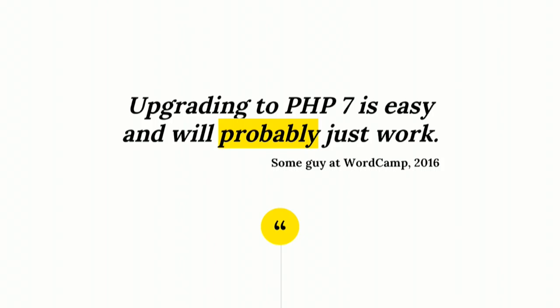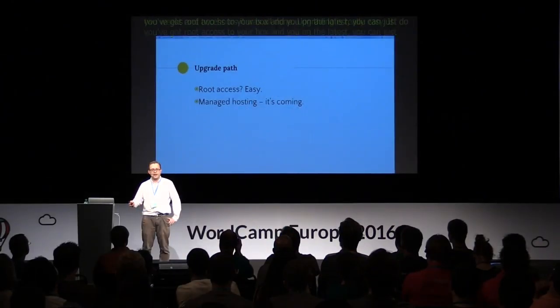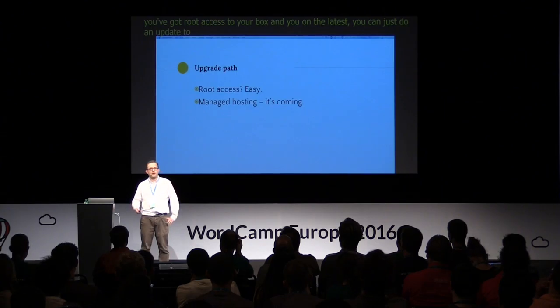My main takeaway advice: upgrading to PHP 7 is really easy and will probably just work. I've done three codebases now — one of them literally took about two hours, and we had set aside a couple of weeks. If you've got root access to your box and you're on the latest Ubuntu, you can just run apt-get install to upgrade to PHP 7. Otherwise, you have to install the repos, but they're really easy.